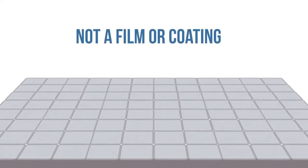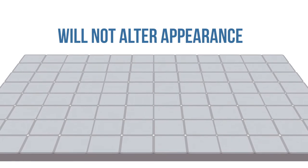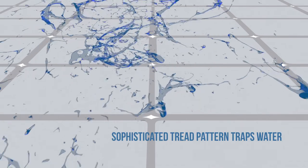No-slip bathtub won't chip or peel because it's not a film or a coating, nor will it change the appearance of your shower or tub. The sophisticated tread pattern traps water which creates a vacuum that greatly reduces slipping.